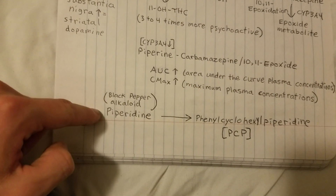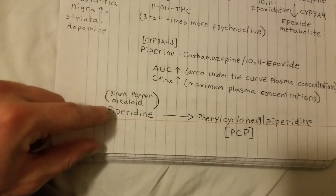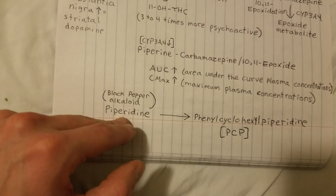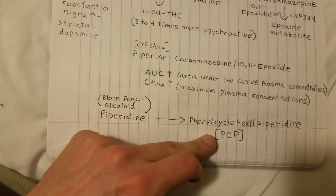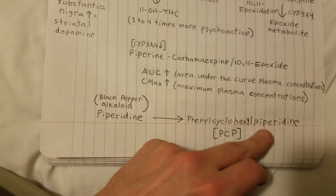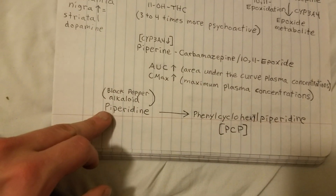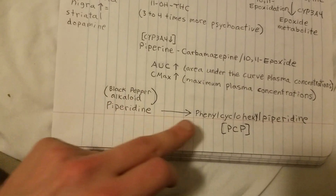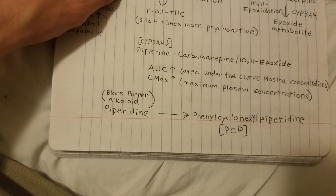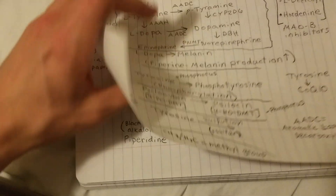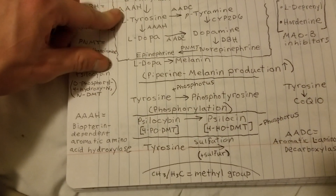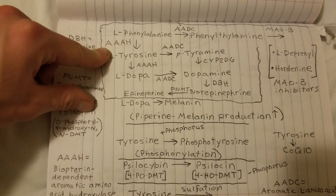An alkaloid found in black pepper, piperidine, can also be a very useful tool as a precursor to a known illicit substance — PCP — which even has the piperidine ring. The naturally occurring alkaloid found in black pepper becomes phencyclidine (PCP) through a chemical process of extraction to make the derivative.